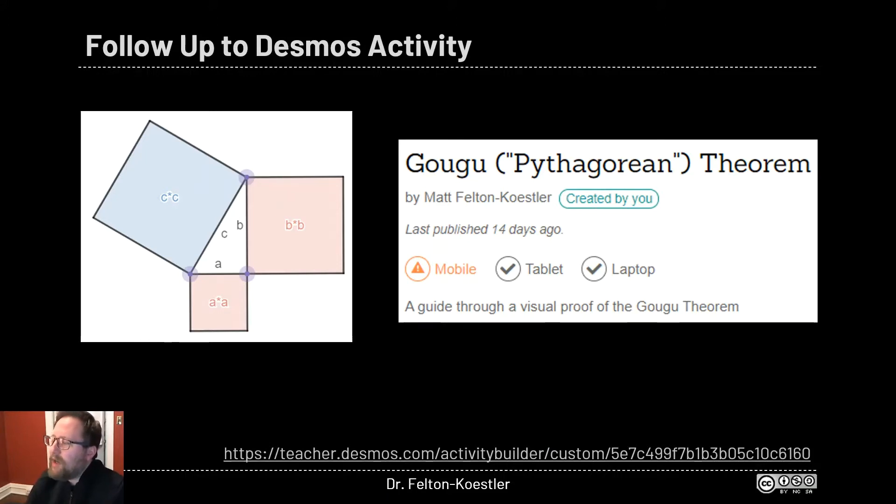One of the problems of the history of math is that we often either don't learn any history of math, so math seems like it just exists out in the universe, or we only learn about the European or primarily learn about the European contributions to mathematics. And we therefore ignore the rich mathematical history of different cultures and people all over the world.